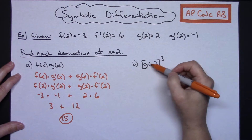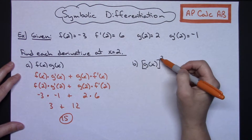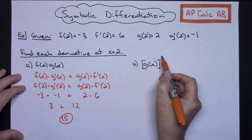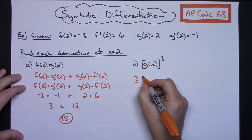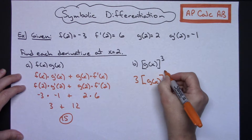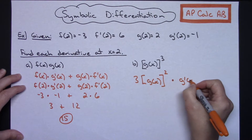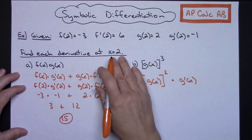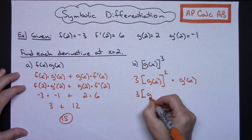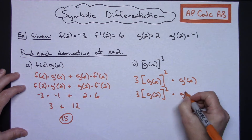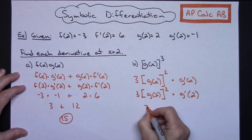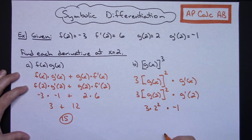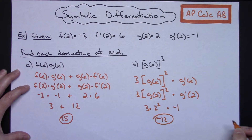In part b, I've got the g function raised to the third power. This is going to be power rule on the outside, and because that function in there — I don't know what it is — it's going to involve a chain rule. So when I take the derivative, I do the power rule: pull the 3 down, leave the inside function alone, subtract the exponent by 1, and then multiply it times the derivative of that inside function. Now I want the derivative at 2, so it's 3 times g(2) squared times g'(2). Going back to my chart, g(2) is 2, so 3 times 2 squared times g'(2) which is negative 1 — this is going to be 12 times negative 1, giving me negative 12 for that derivative.